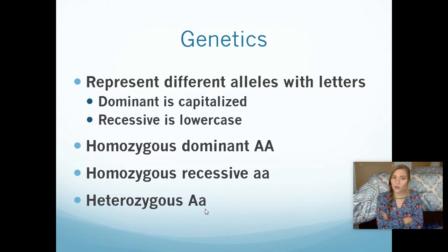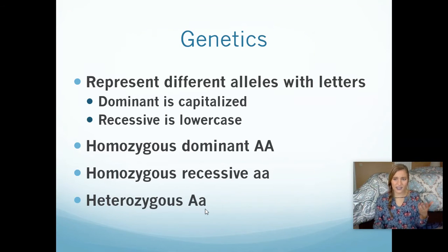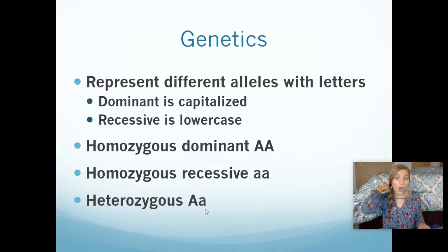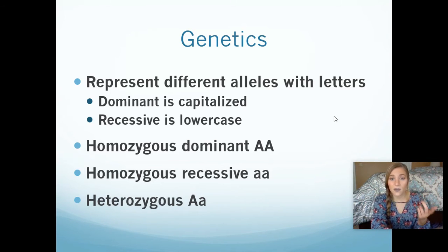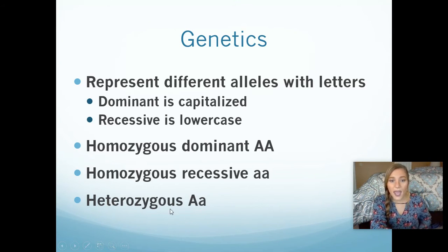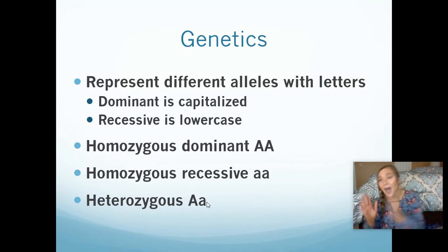Now here's my question: what trait would that person show? If they have the recessive allele and the dominant allele, would they show the dominant one or the recessive? Which one is going to mask the other? Well, the dominant allele is going to be the one that's shown if you have both. Somebody with only recessive alleles would show no freckles, but somebody who's heterozygous is going to show the dominant trait because they also have the dominant allele, and it masks that recessive one.